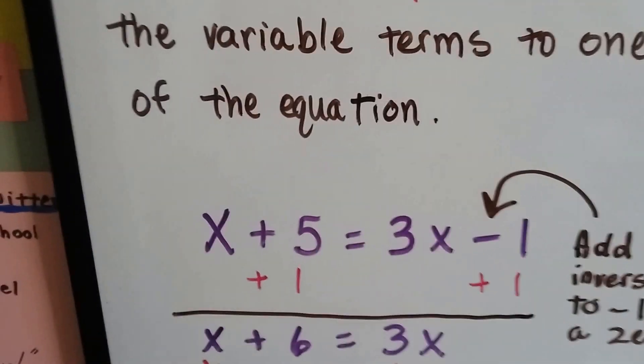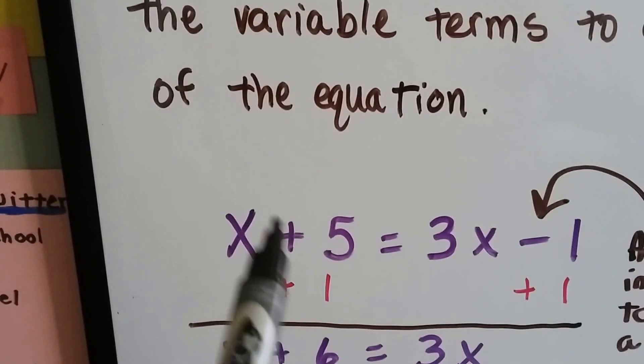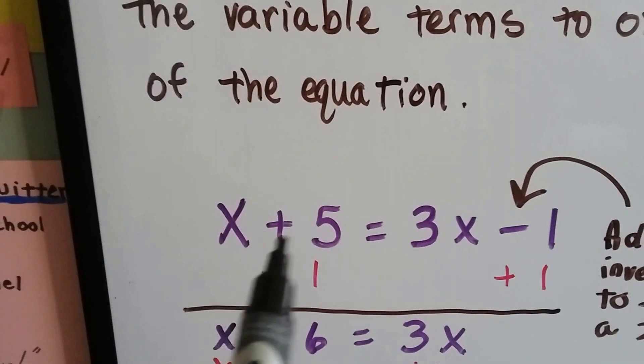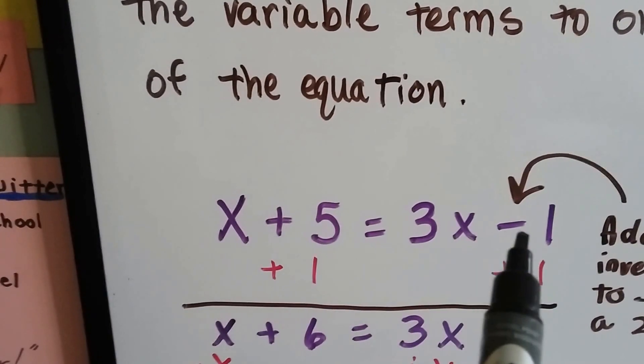So let's look at this one. We've got an x on both sides of the equation. On this side of the equal sign, it's x plus 5, and on this side, it's 3x minus 1.